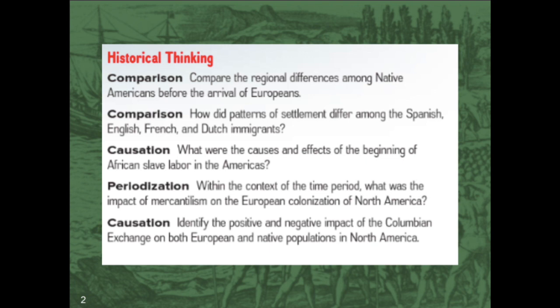Next, we'll look at periodization — the context of the time period and what the impact of the system of mercantilism was on European colonization of North America. So within the lens of mercantilism, what was going on in the European psyche as they sought to colonize North America. Lastly, we have another causation as we try to identify both the positive and negative impacts of the Columbian Exchange — the exchange of various foodstuffs, other materials, and of course diseases between the world of Europe, Asia, and Africa, and the world of North and South America. Spoiler alert: one group had a much better experience with the Columbian Exchange than the other.